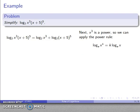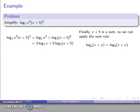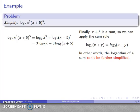We want to simplify as much as possible. The first term, log base 7 of x³, is a power, so I apply the power rule — the exponent 3 becomes a coefficient: 3 log base 7 of x. The second term is also a power, so the exponent 5 becomes a coefficient: 5 log base 7 of (x+5). Now (x+5) is a sum, and the log of a sum cannot be simplified further using log rules, so this is as far as the simplification goes.